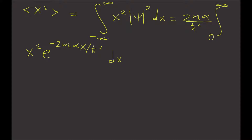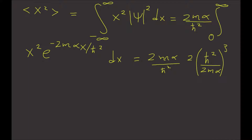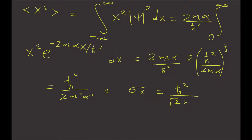This is equal to 2 times m times alpha divided by h-bar squared, times 2 times h-bar squared divided by 2m alpha to the third. Simplifying, this gives h-bar to the fourth divided by 2 times m squared alpha squared. This is the expectation value of x squared, so the error in the position measurement sigma_x is equal to h-bar squared divided by the square root of 2 times m times alpha.